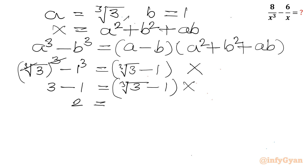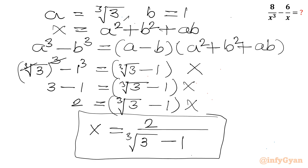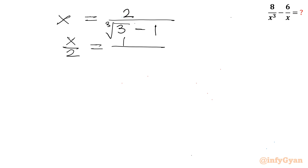So this gives 2 equal to cube root 3 minus 1 times x. Therefore x equals 2 over cube root 3 minus 1. First I will divide both sides by 2, so x over 2 equals 1 over cube root 3 minus 1. Now taking the reciprocal of both sides — flipping numerator and denominator — gives 2 over x equal to cube root 3 minus 1.